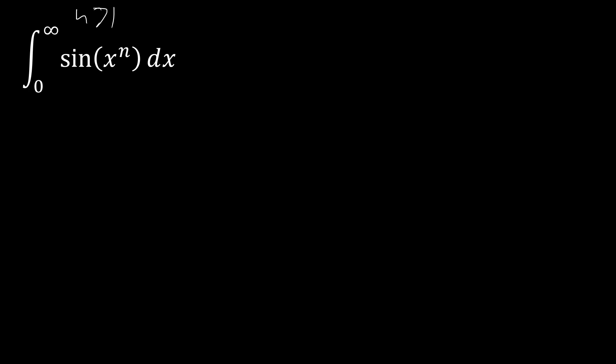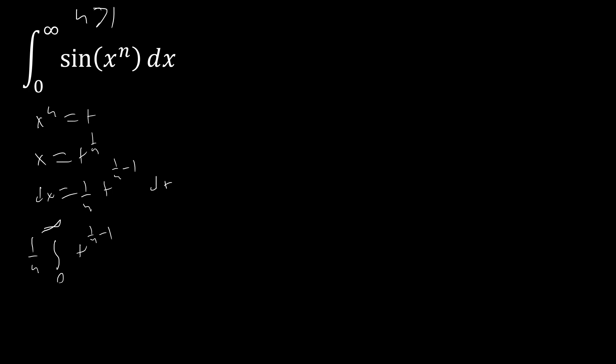Now we convert this into the Mellin transform form to apply Ramanujan's Master Theorem. We substitute x^n = t, so x = t^(1/n) and dx = (1/n) t^(1/n − 1) dt. This gives us (1/n) times the integral from zero to infinity of t^(1/n − 1) times sin(t) dt — that's t^(s−1) times sin(t) dt. This is in the form of the Mellin transform, and now we need to figure out what φ(n) is.